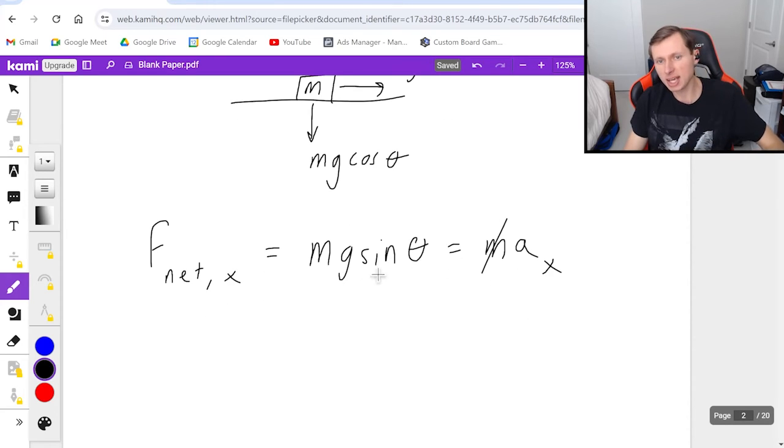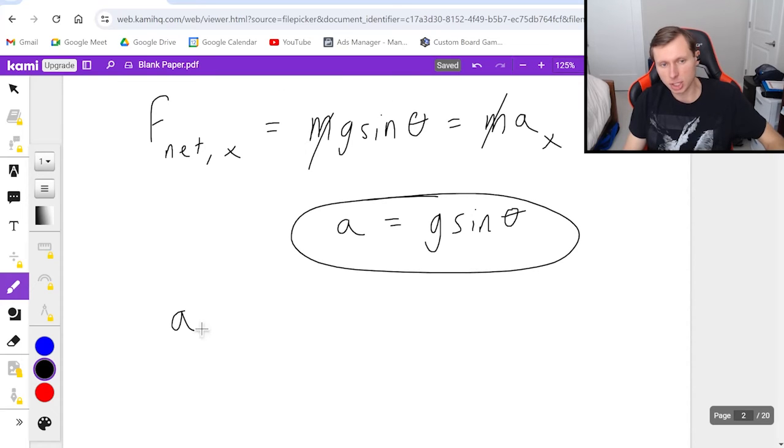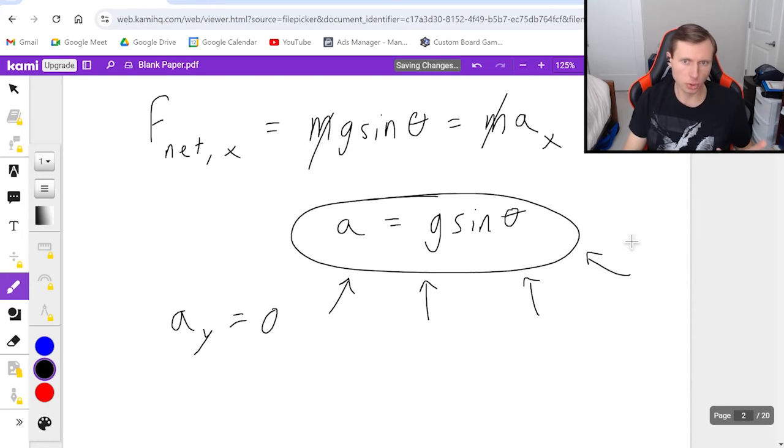Technically this is the x component of acceleration but I'm not going to make a big deal about that. You'll notice that the mass cancels right here which is why it didn't matter when I gave you mass as a variable. And so the final answer, it looks like the acceleration in the x direction is equal to g sine theta. And I'm going to circle that. That's my answer. I said that was the acceleration in the x direction. Technically since the acceleration in the y direction is zero, all the acceleration is in the x direction and so therefore this is my final answer.